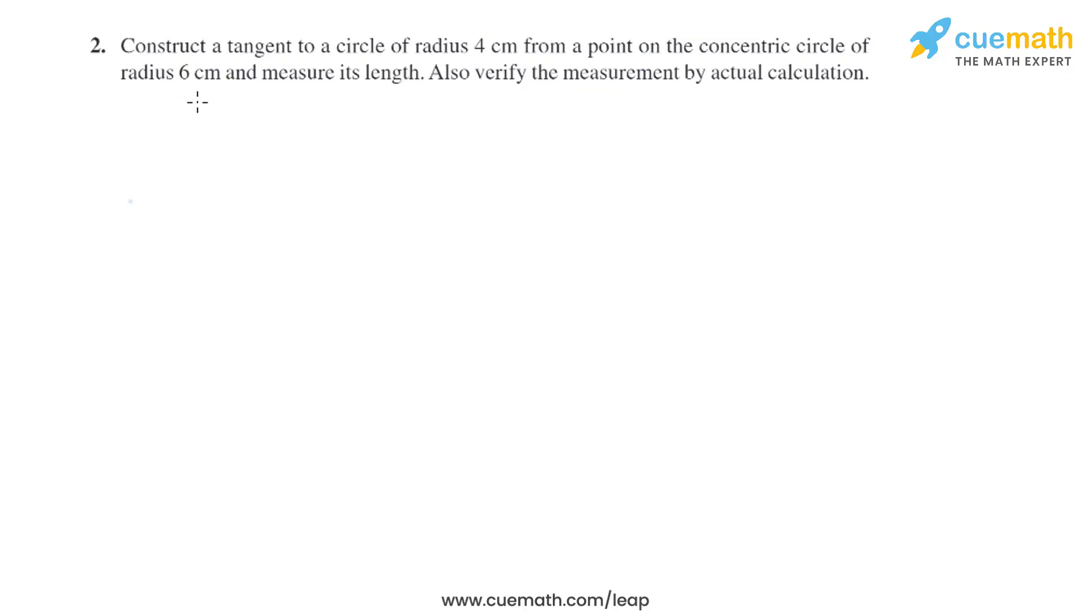Question 2 of this exercise says construct a tangent to a circle of radius 4 cm from a point on the concentric circle of radius 6 cm and measure its length. Also verify the measurement by actual calculation.